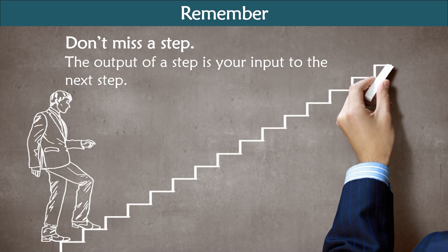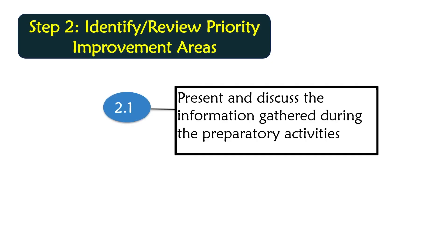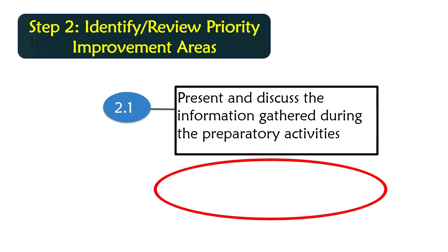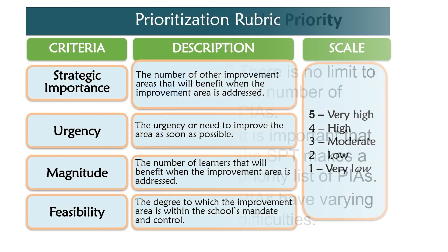The output of each step is your input to the next step. Identify priority improvement areas, present and discuss the information gathered during the preparatory activities. PIAs or priority improvement areas are the most pressing needs or problems within and outside of the school that surface from your school and learners' data. There is no limit to the number of PIAs. Remember that it is important that the SPT makes a priority list, as PIAs have varying difficulties.